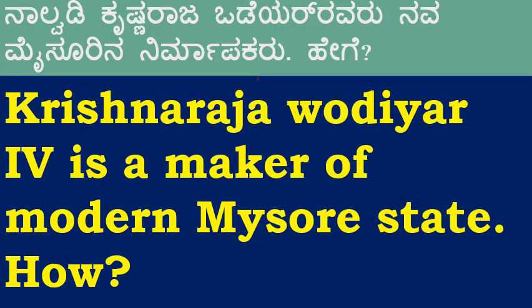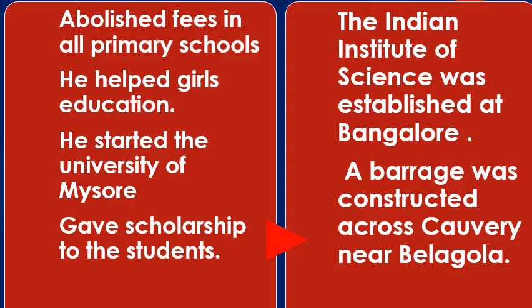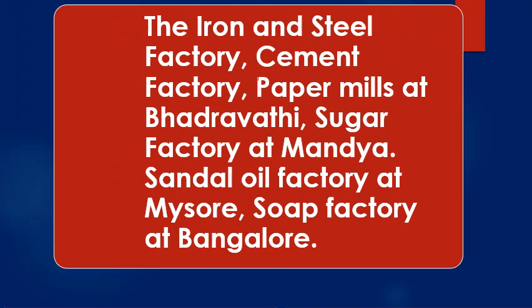Krishnajavardir IV is a maker of modern Mysore state. He abolished fees in all primary schools, helped girls' education, started the University of Mysore, gave scholarships to students who wanted to study in foreign countries. He established a Tata Institute in Bangalore, a barrage across River Kaveri near Galagala, iron factory, steel factory, cement, paper factories at Badravati, a sugar factory in Mandya, sandalwood oil factory in Mysore, soap factory in Bangalore. He received the title Rajasri from Mahatma Gandhi.